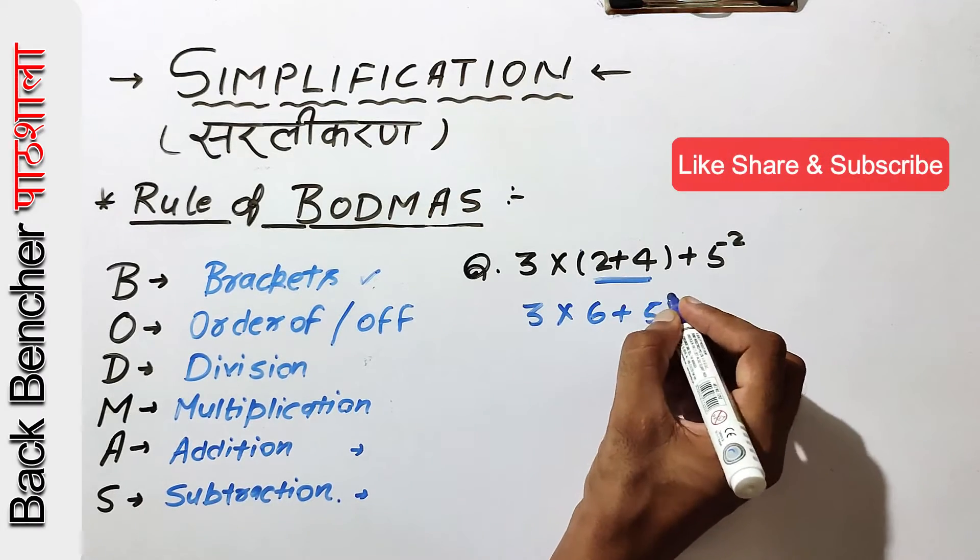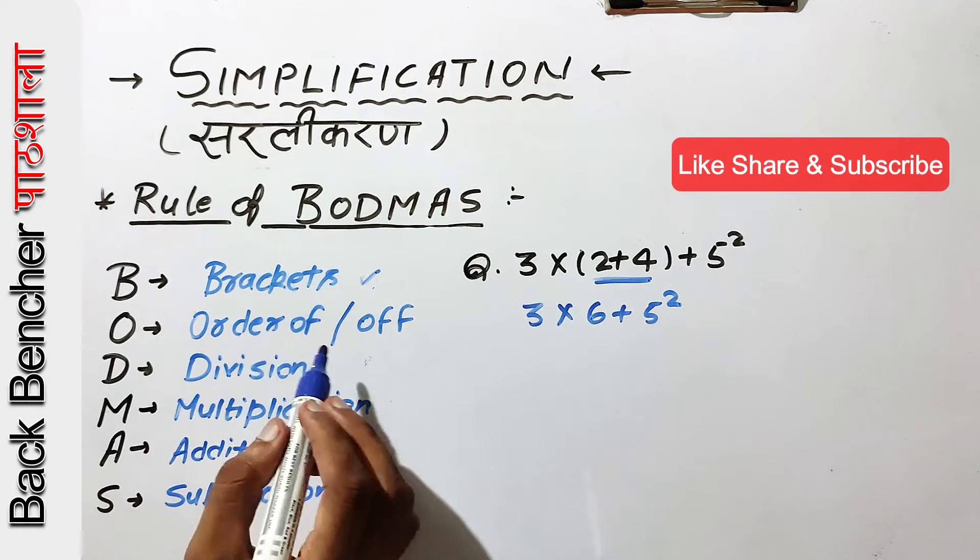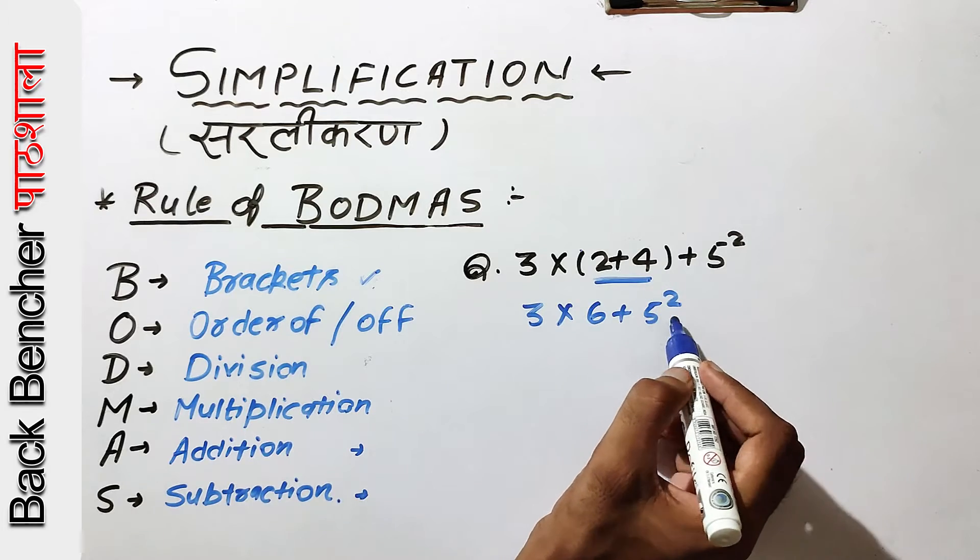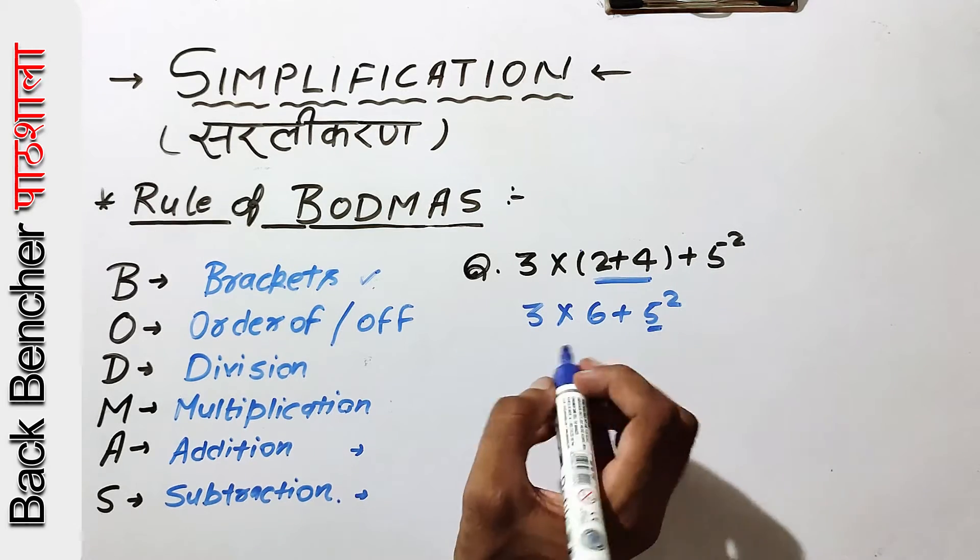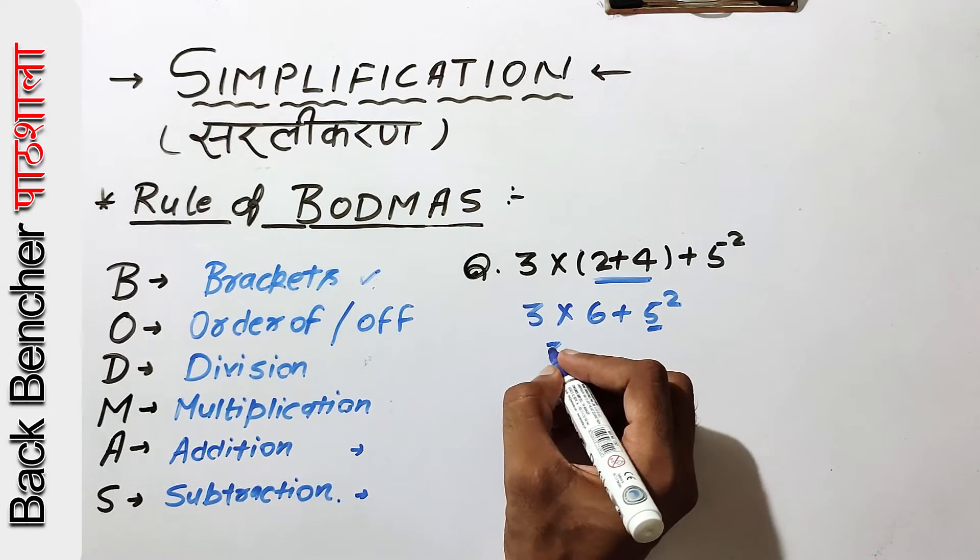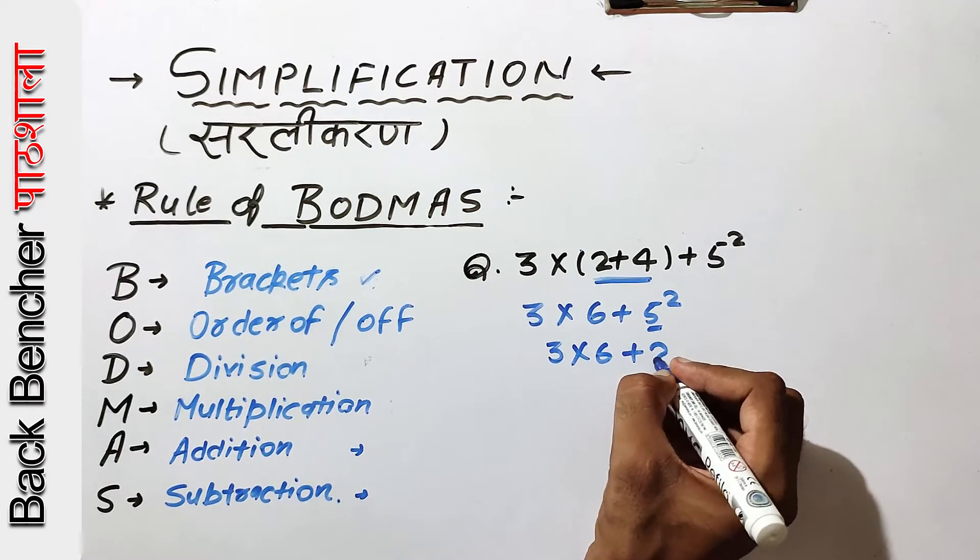6 plus 5 power 2. Now we have order of the offset, so we will solve this. 3 into 6 plus 25.